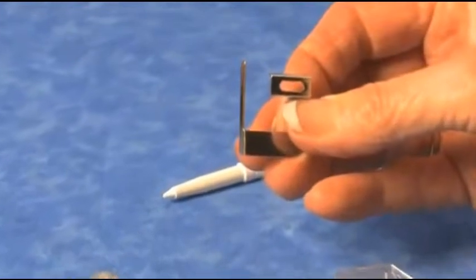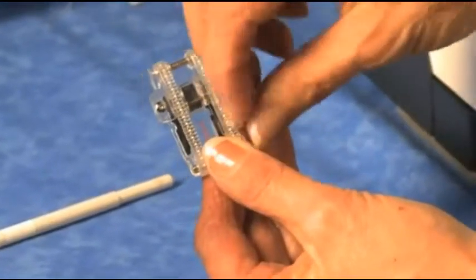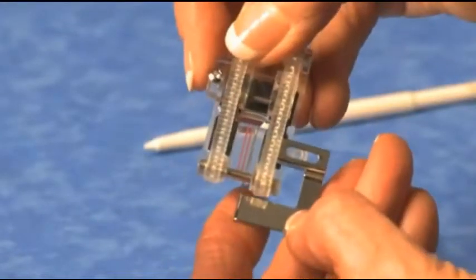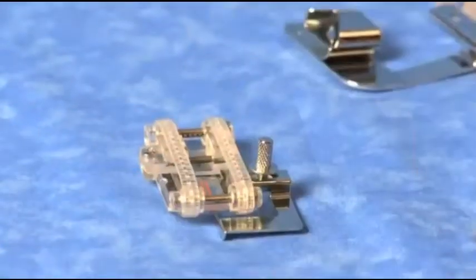To install the blind hem guide, loosen and remove the screw on the Rotary Foot. Slide the attachment into place and tighten the screw.